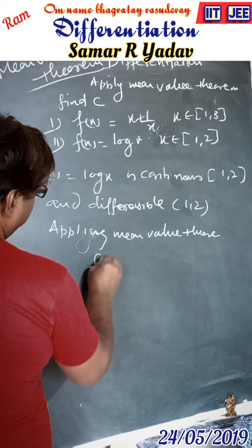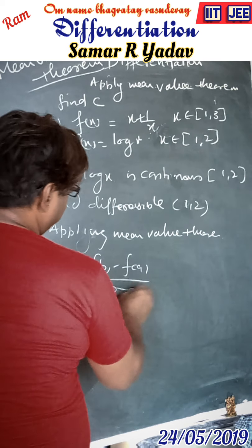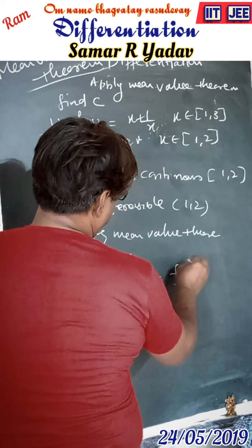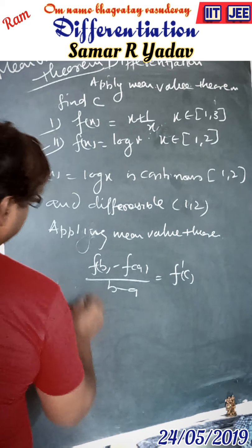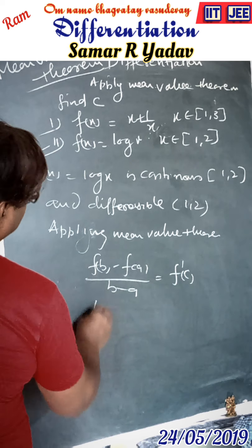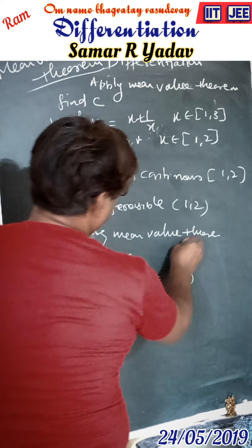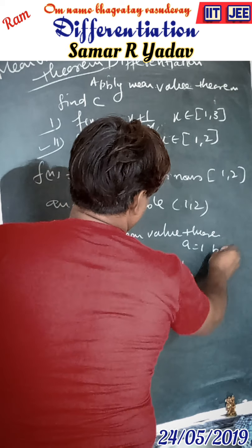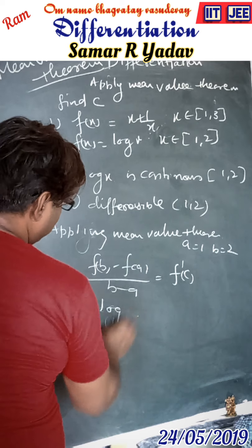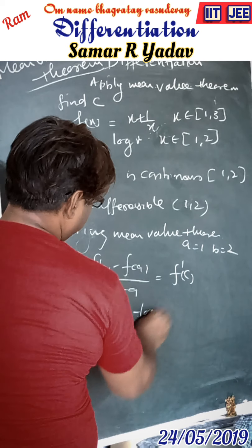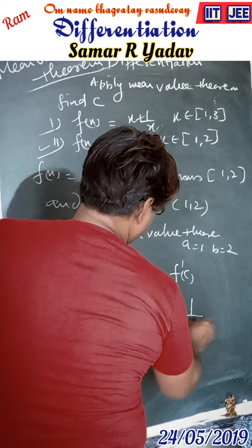Applying the Mean-Value Theorem, we get: [f(b) - f(a)] / (b - a) = f'(c). For f(x) = log x with a = 1 and b = 2, we substitute: (log 2 - log 1) / (2 - 1) = 1/c.